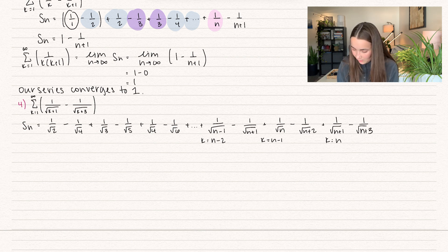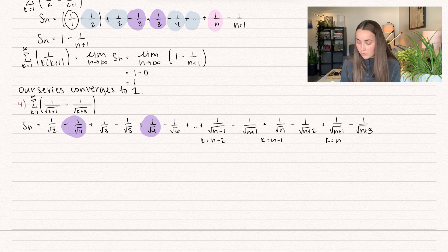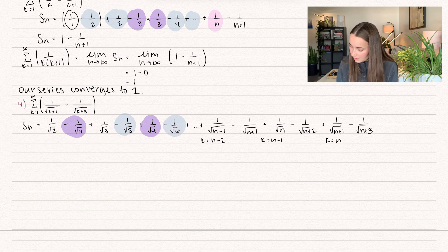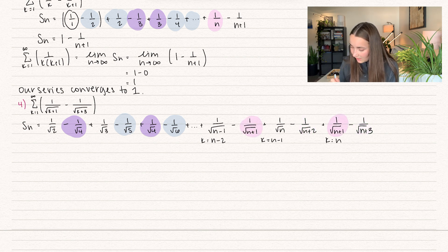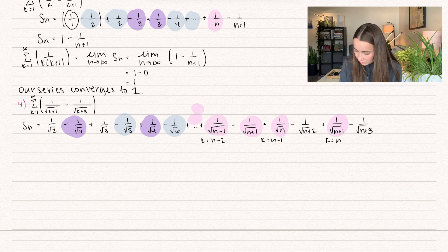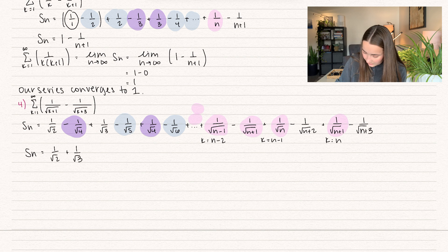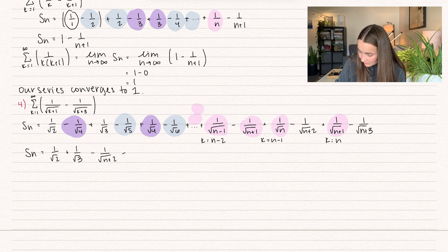Let's see what terms cancel. We have minus 1 over √4 plus 1 over √4 — those cancel. The 1 over √2 doesn't cancel, 1 over √3 doesn't cancel. On the right side, 1 over √(n+1) cancels with a matching term. So looking at what we're actually left with: our partial sum equals 1 over √2 plus 1 over √3, and all the other terms cancel until we reach the end, where we have minus 1 over √(n+2) minus 1 over √(n+3).